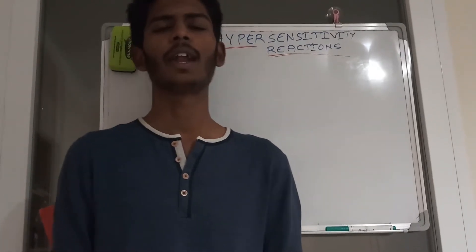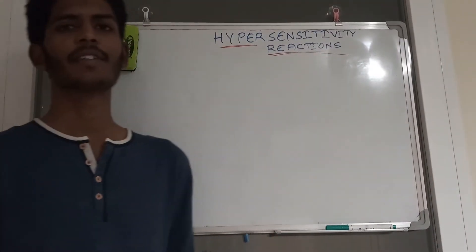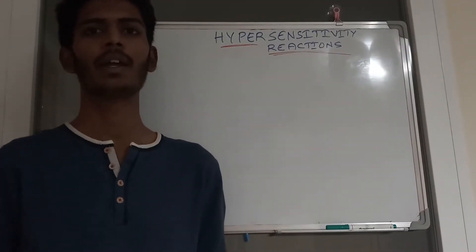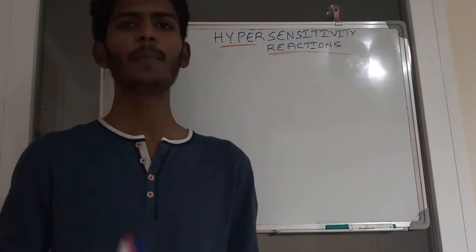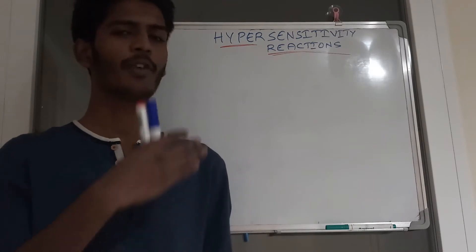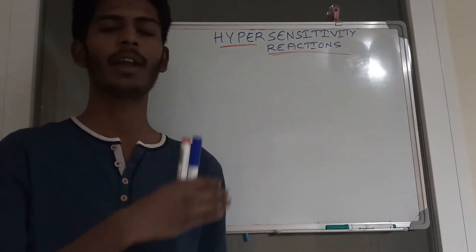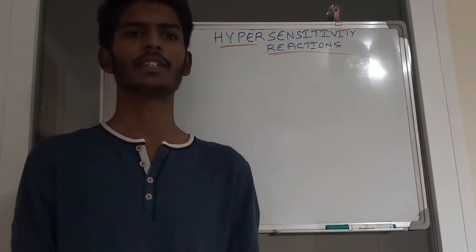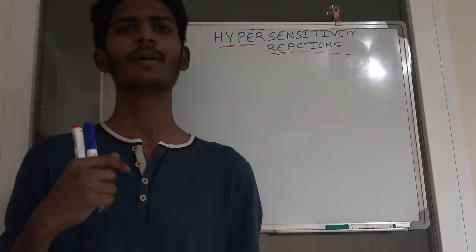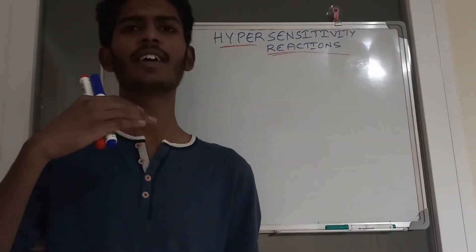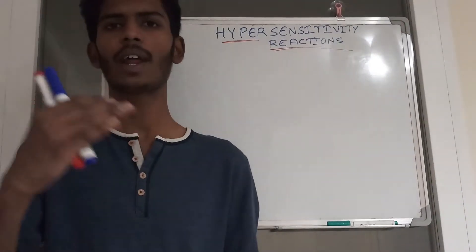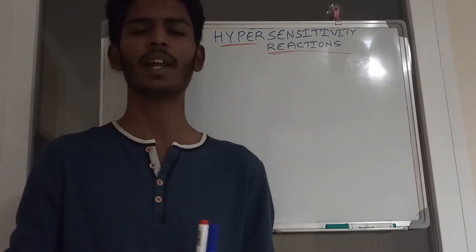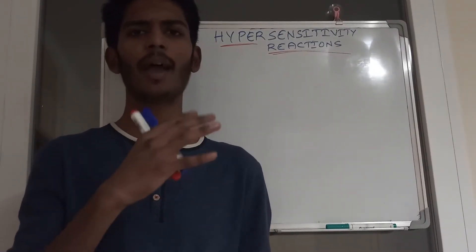Today we will discuss hypersensitive reactions. Our immune system protects our body from foreign objects, bacteria, viruses, and so on. In a hypersensitive reaction, the immune system functions with hyperactivity — meaning an exaggeration or over-activity of the immune system — which leads to certain reactions and causes changes in our body. That is called a hypersensitive reaction.